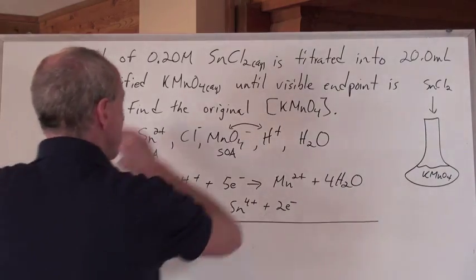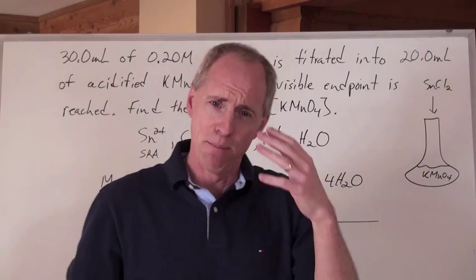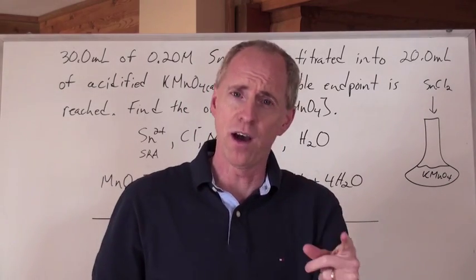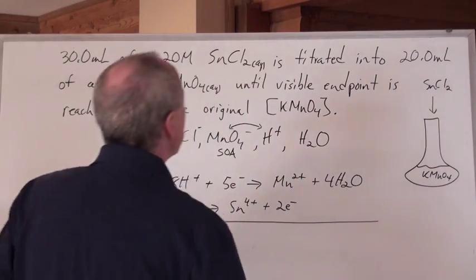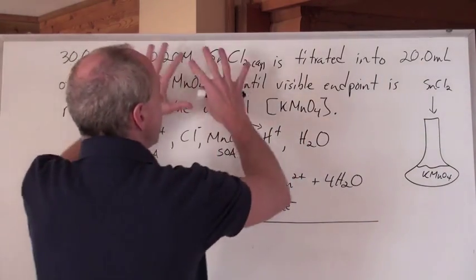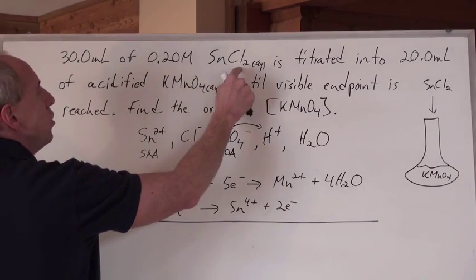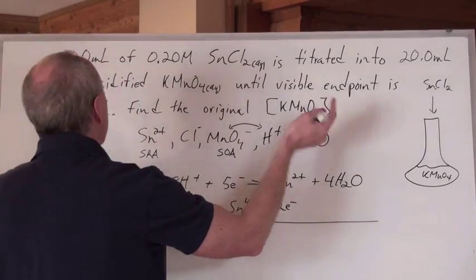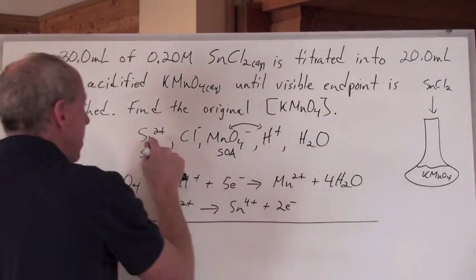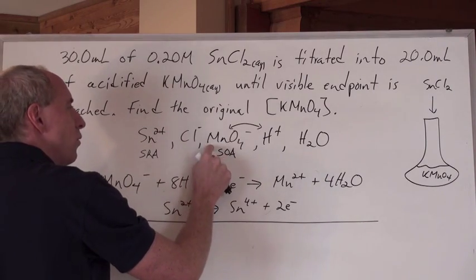What do you do? Where do you start? It's a redox question. Make a list of chemicals so you can find your strongest oxidizing agent and strongest reducing agent. In this question, you've got tin(II) chloride, you break it into its ions, and potassium permanganate, you break it into its ions. That's what I did in this list: Sn²⁺, Cl⁻, MnO₄⁻.